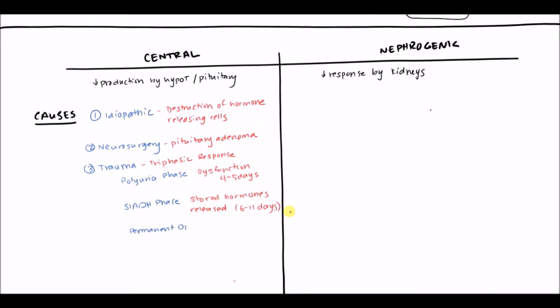This SIADH phase is very dangerous. When a patient presents with polyuria and hypernatremia, you're restricting salt and giving more fluids. Then suddenly they have way too much ADH, so all the fluid you've given them — combined with the salt you restricted — means they can't get rid of the water, and they can actually become hyponatremic. Hyponatremia is very dangerous, so this is an important thing to keep in mind.